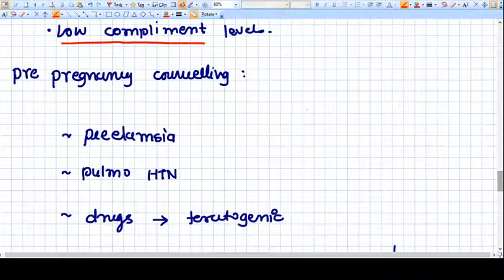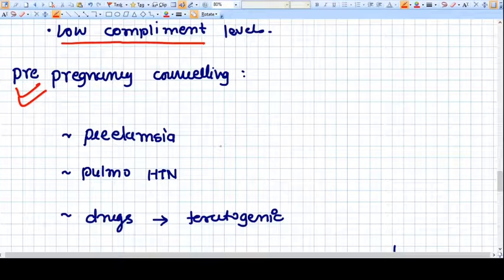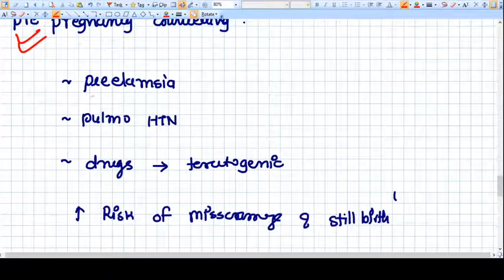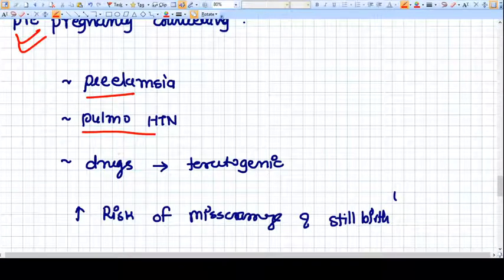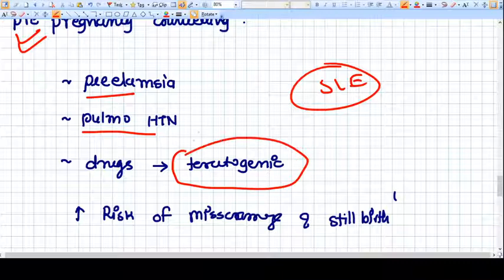How do you do pre-pregnancy counseling? You explain to the patient that there is increased chance of preeclampsia, pulmonary hypertension, and sometimes the SLE becomes so worse that we have to use some drugs which are teratogenic, with increased risk of miscarriage and stillbirth.